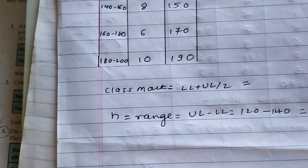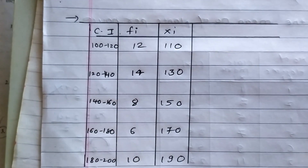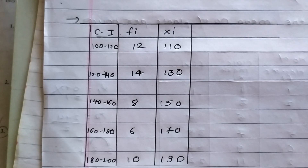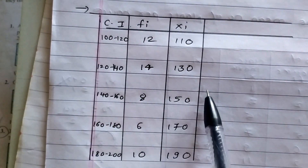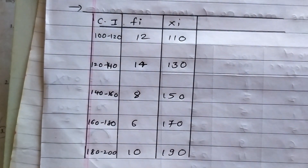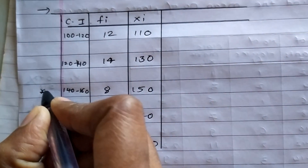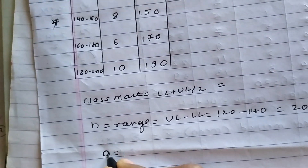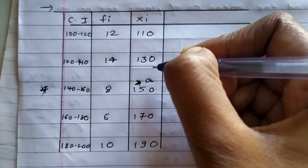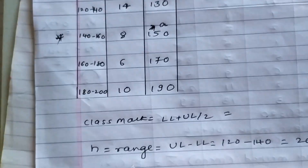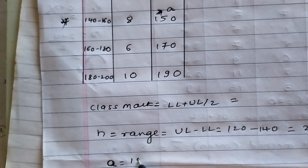In the direct method you find FI into XI, but today I am teaching the step deviation method. For that you need to identify the modal class — the middle-most class interval. The class mark of this middle class is taken as A for convenience. Leaving two class intervals from either side, the middle class mark is 150, so A equals 150.